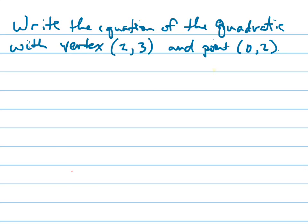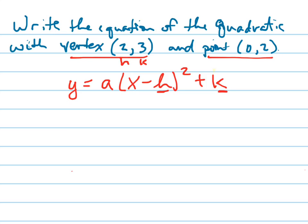They want us to write the equation of a quadratic with a vertex of 2, 3 containing the point 0, 2. So we'll remember our vertex form equation of a quadratic. And there it is. Remember this is h, k is your vertex, so h, k, h is 2, k is 3.